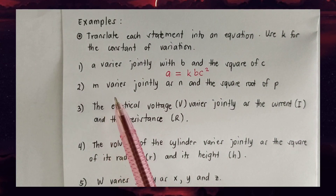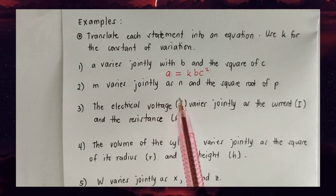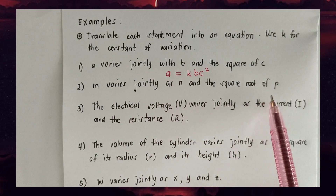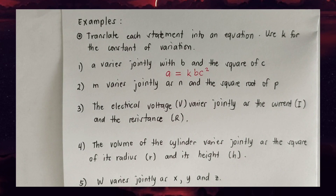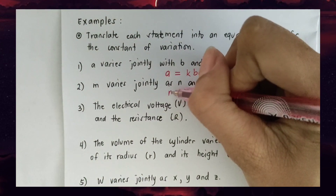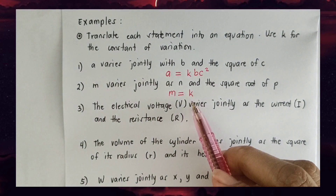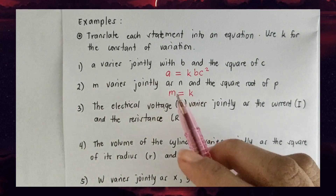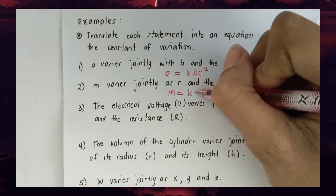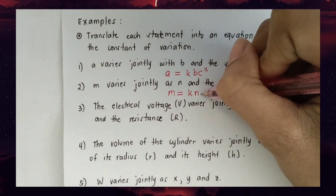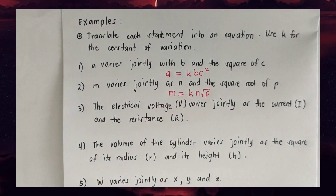Number two: 'm varies jointly as n and the square root of p.' The equation is m = kn√p.